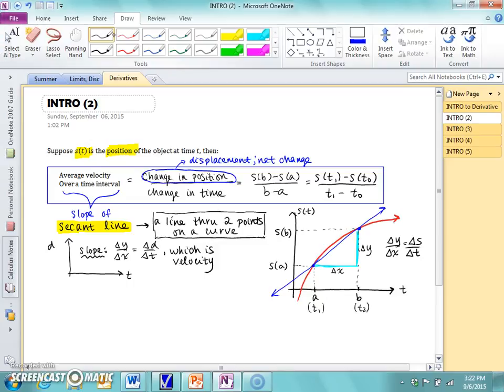We can define the average velocity over a certain time interval as the change in position over change in time. The reason that makes sense is if you were to draw right here, I have time and I have distance. If you were going to find the slope of a function on this coordinate plane, it would be change in y over change in x, which in this case would be change in distance over change in time.